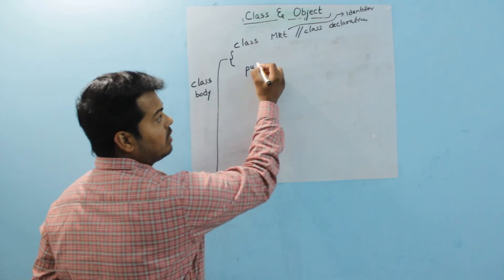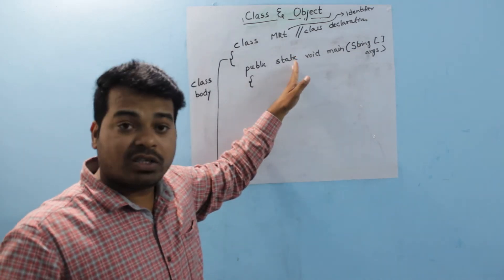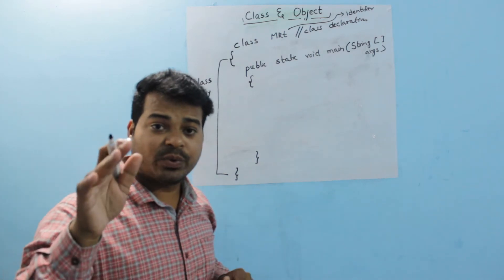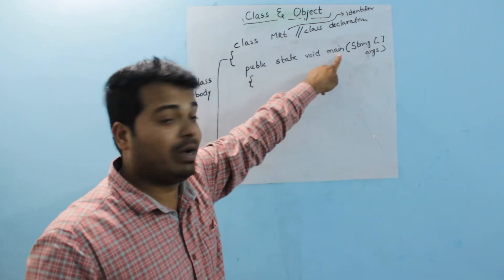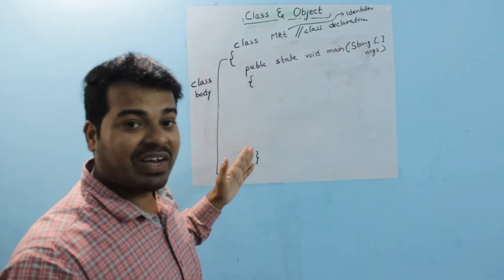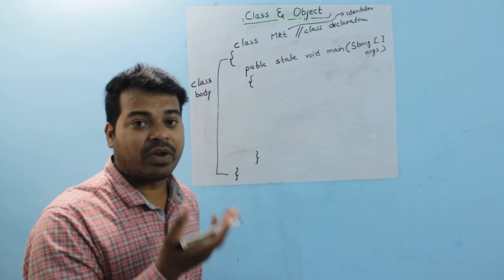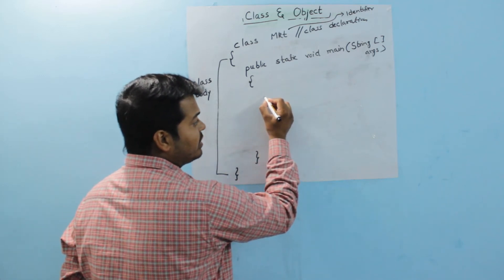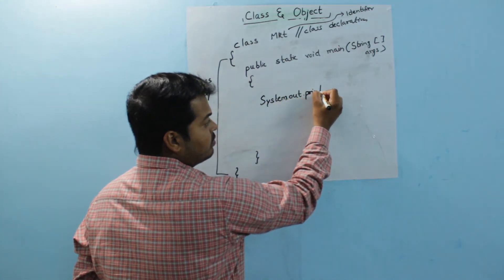Once your class is ready, we are going to write the main method. The main method looks like: public static void main(String args[]). I won't be covering why we write public static void main right now — I will cover that in an upcoming video dedicated to methods in Java. For this first program, just understand that inside your class you have to write public static void main(String args[]). Our aim was to print 'Software Testing by MKT.'